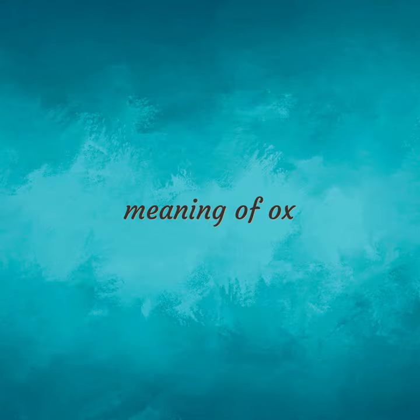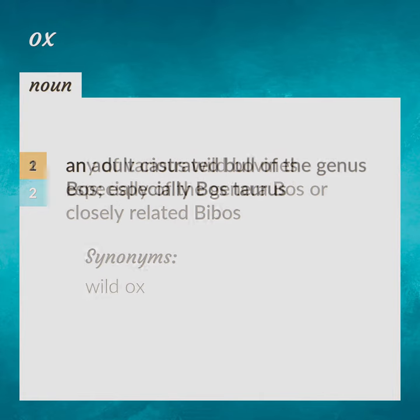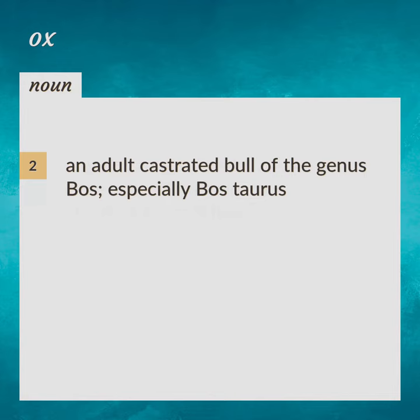Meaning of Ox. Any of various wild bovines, especially of the genera Bos or closely related Bibos. Wild Ox: An adult castrated bull of the genus Bos, especially Bos taurus.